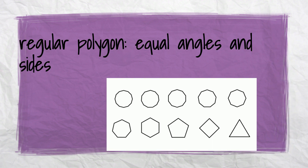Now let's talk about regular polygons. They are shapes that have equal angles and equal sides — that means all sides are the same length and all the angles are the same size.